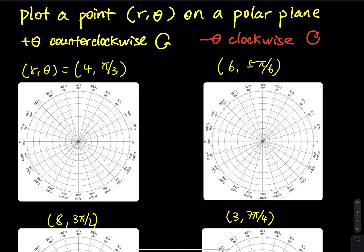The first one is r equals to 4 and theta equals to pi over 3. So r equals to 4 — let's scale the plane: 0, 1, 2, 3, and 4. Pi over 3 is right here. So you go counterclockwise from pi over 4 to pi over 3, and then you put a point right there. r represents the length from the origin to that point, which equals 4.